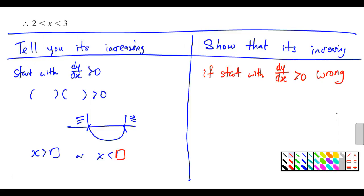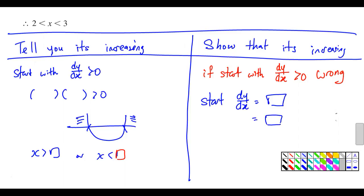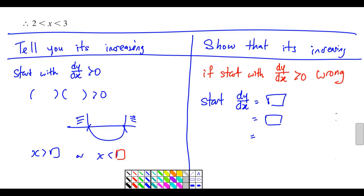Now, if you start with dy/dx more than zero straight away for the whole show question, no marks — it's wrong. Because if it's a 'show' question, you cannot start with that. What you must do is first write dy/dx equals something, then after that equals something. For example: dy/dx is equal to 3 over x squared.